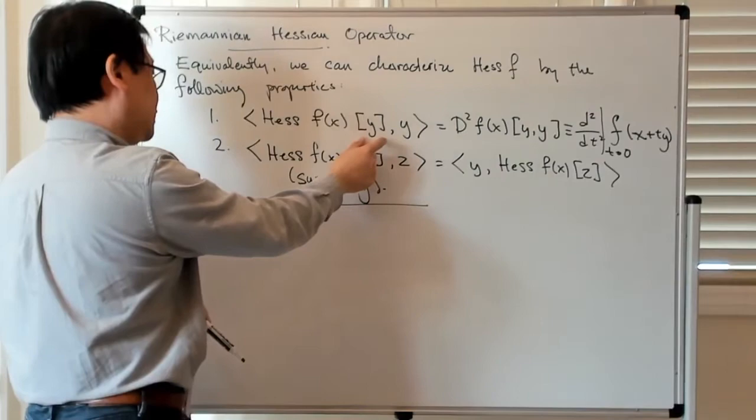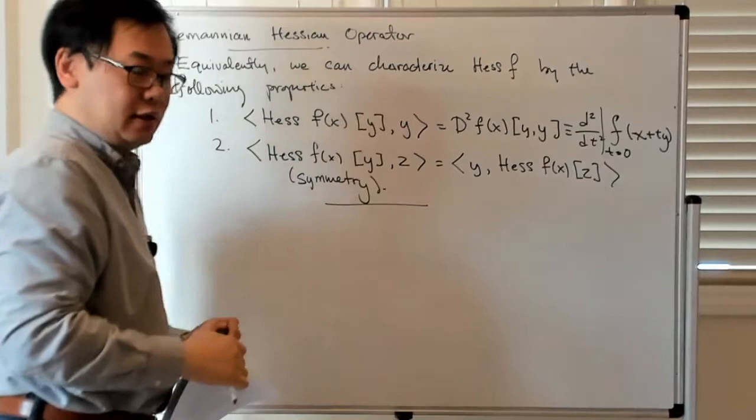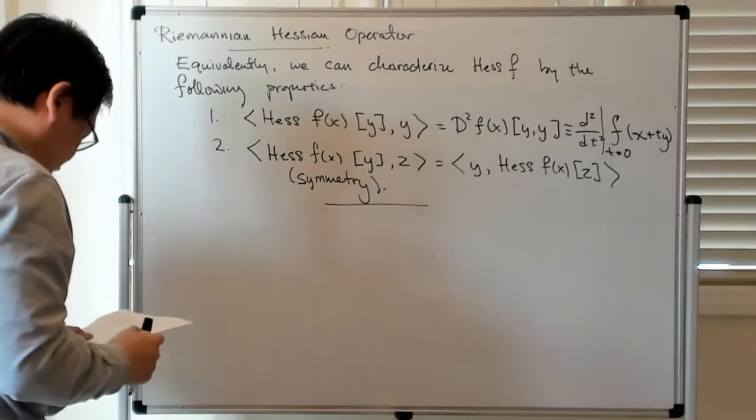then this gives you the Hessian, acting on this direction vector, and then paired with that direction vector again via the inner product.